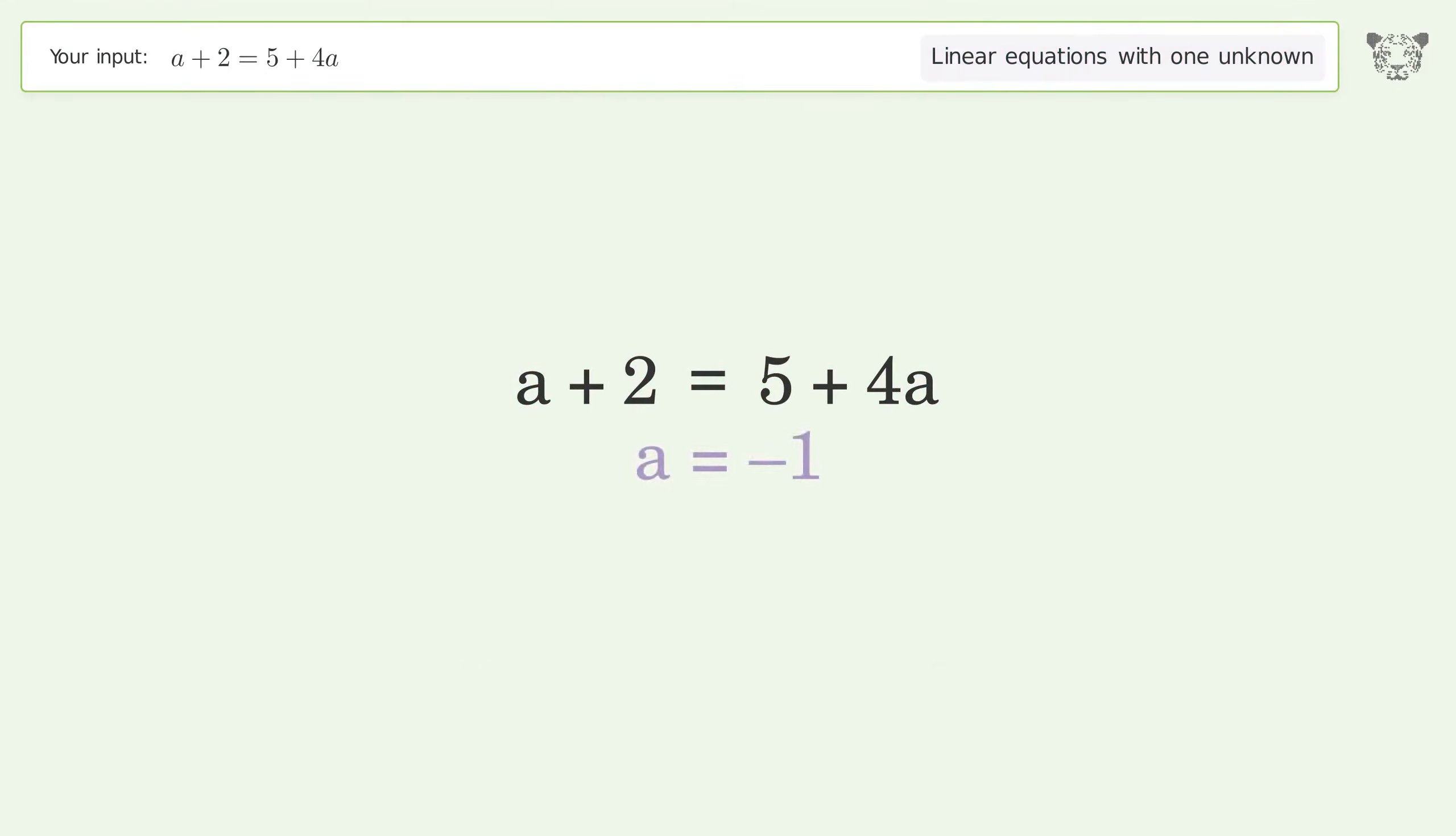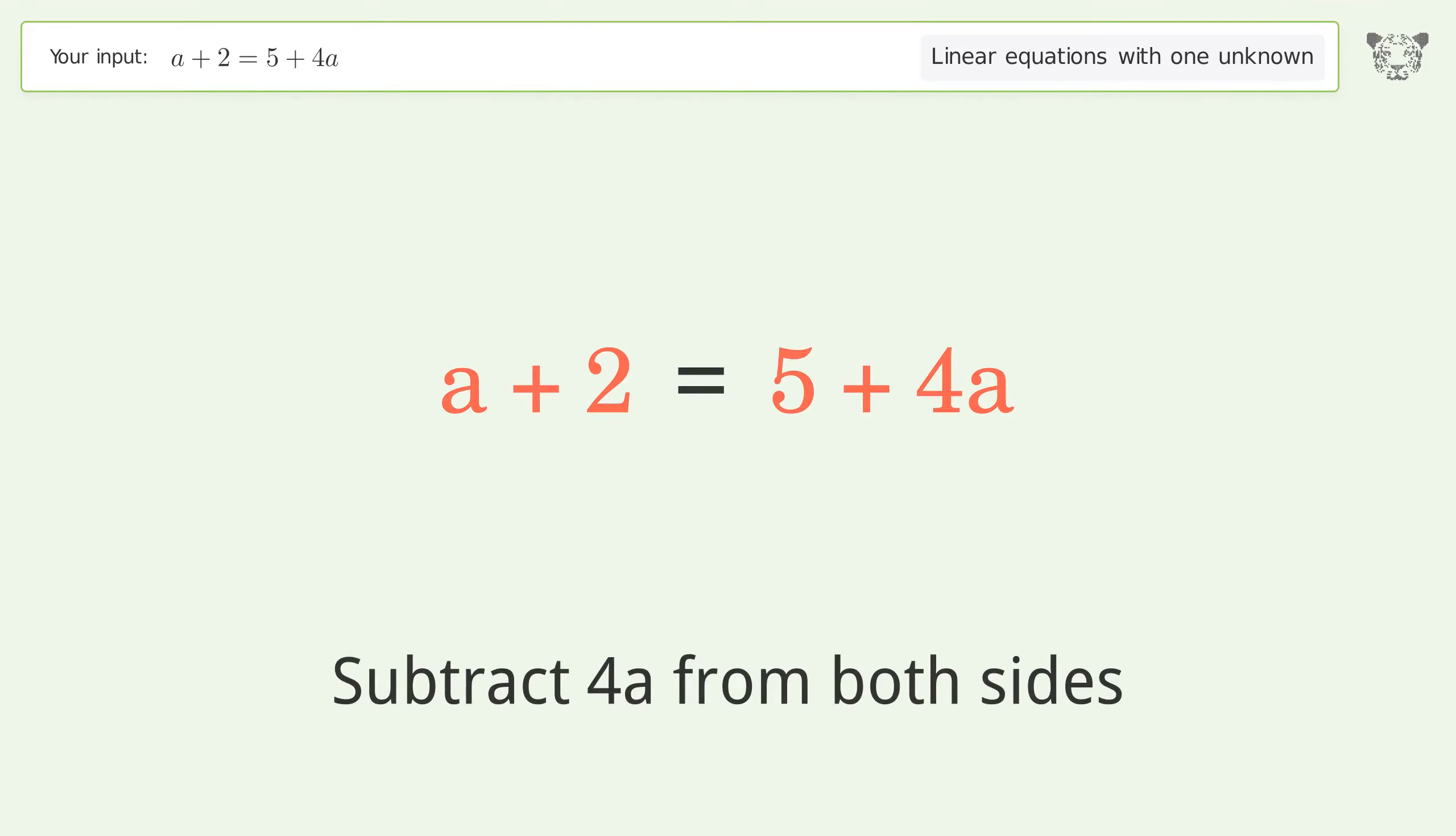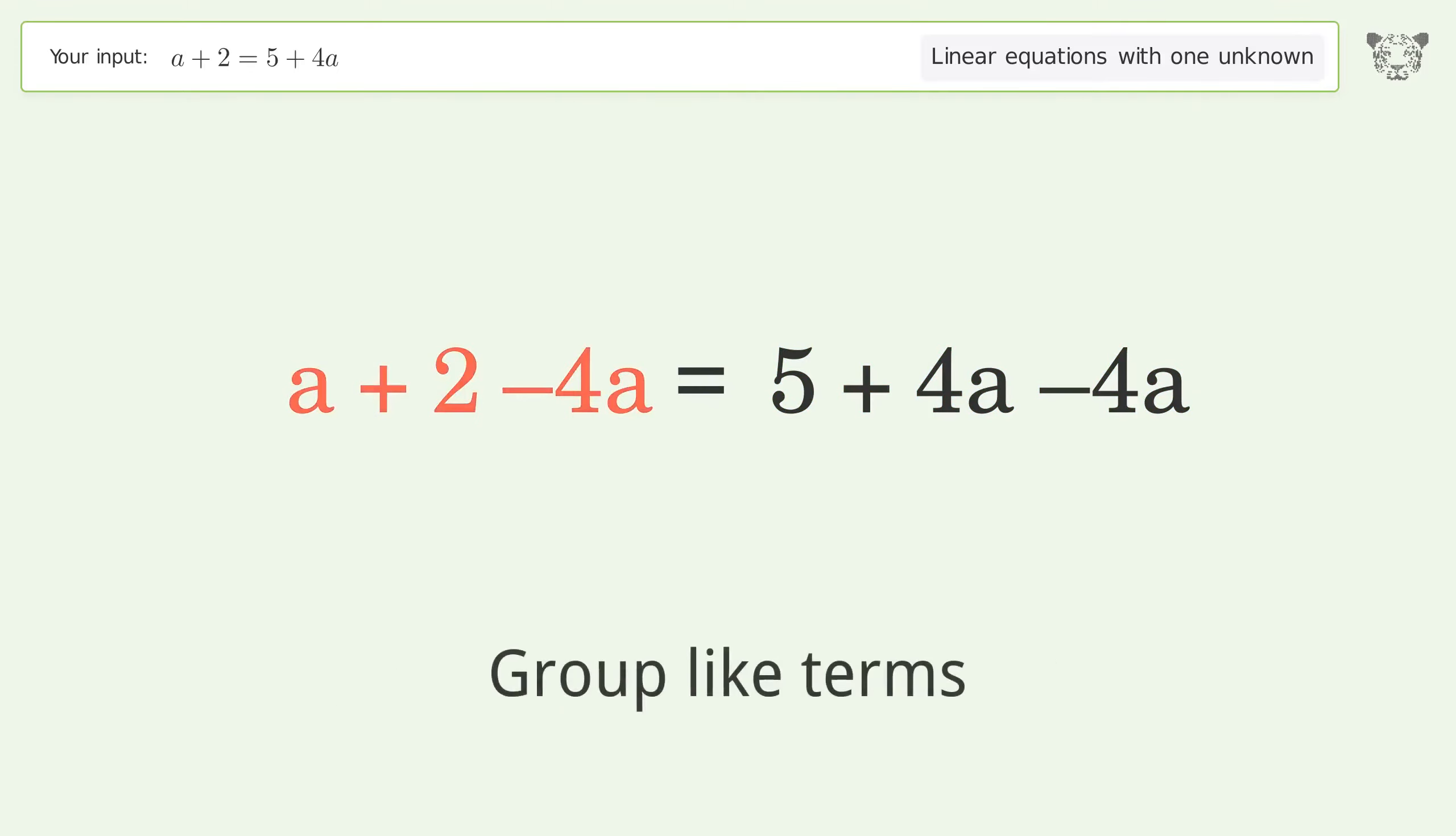You asked Tiger to solve this. This deals with linear equations with one unknown. The final result is a equals negative one. Let's solve it step by step. Group all a terms on the left side of the equation. Subtract 4a from both sides.